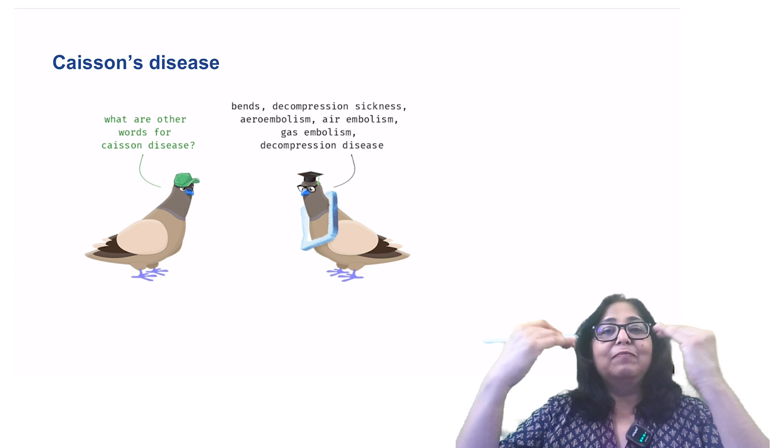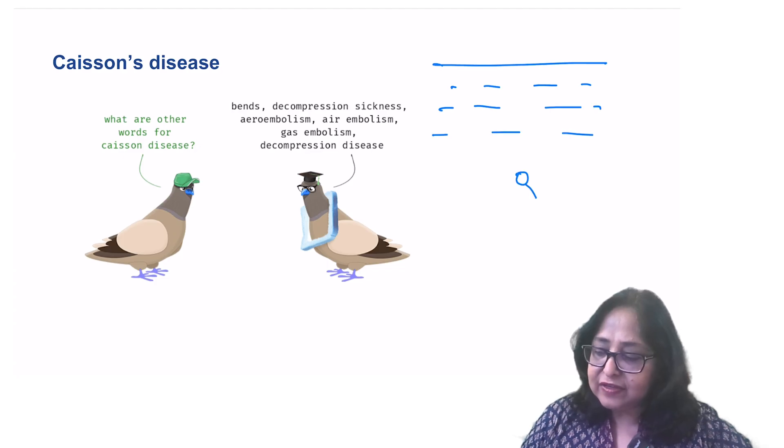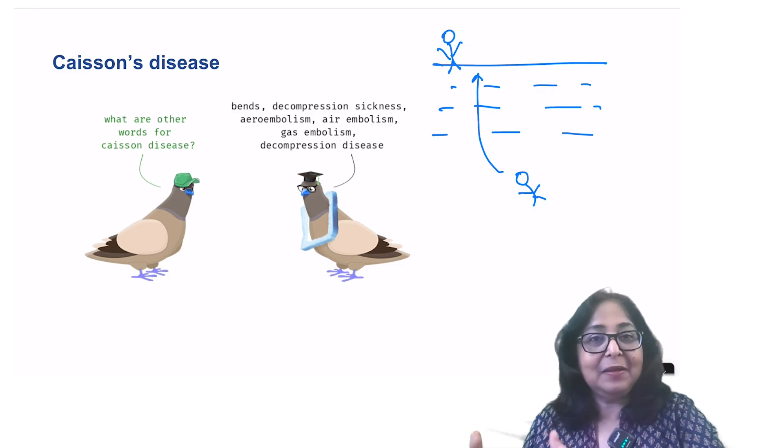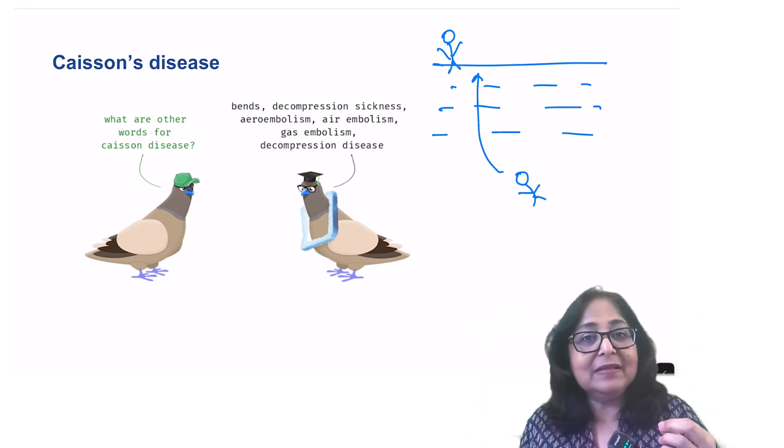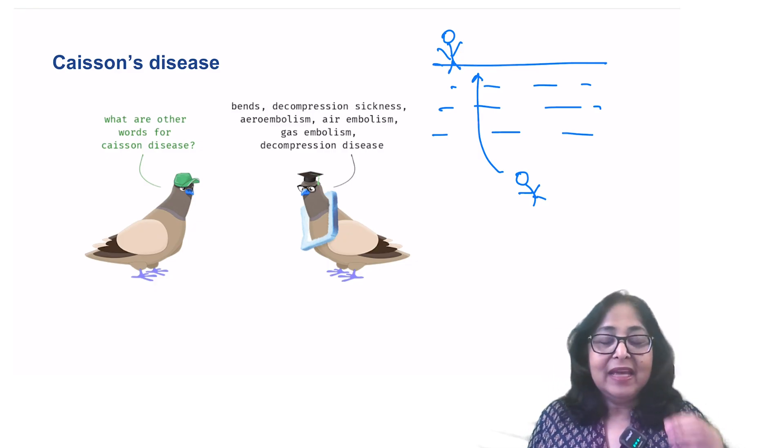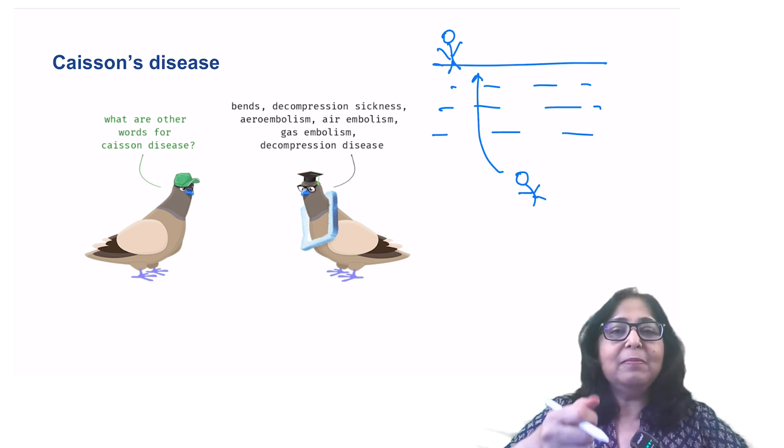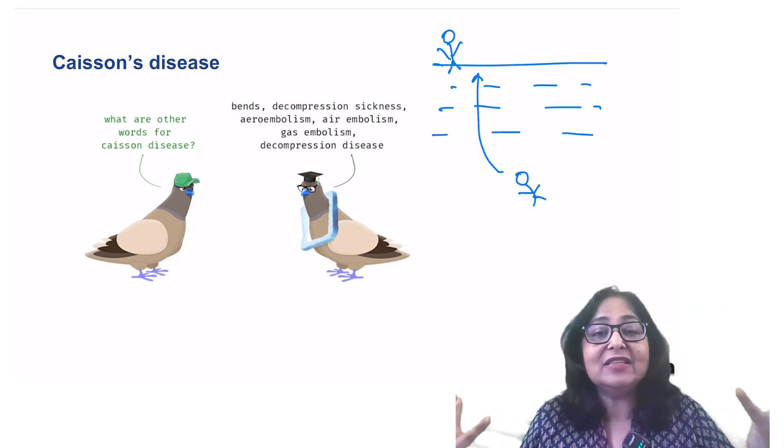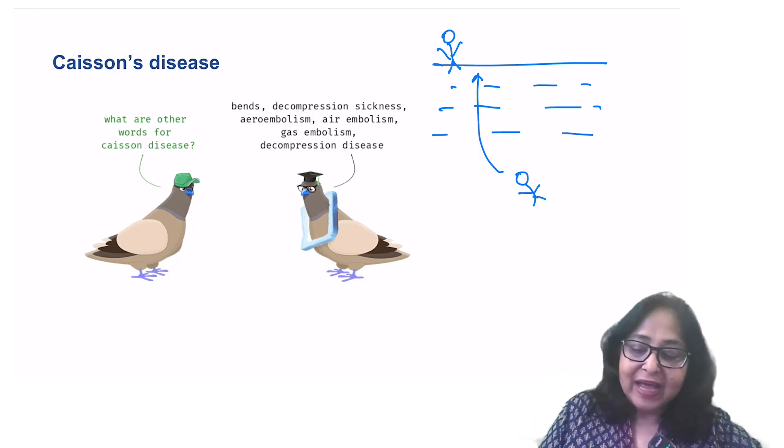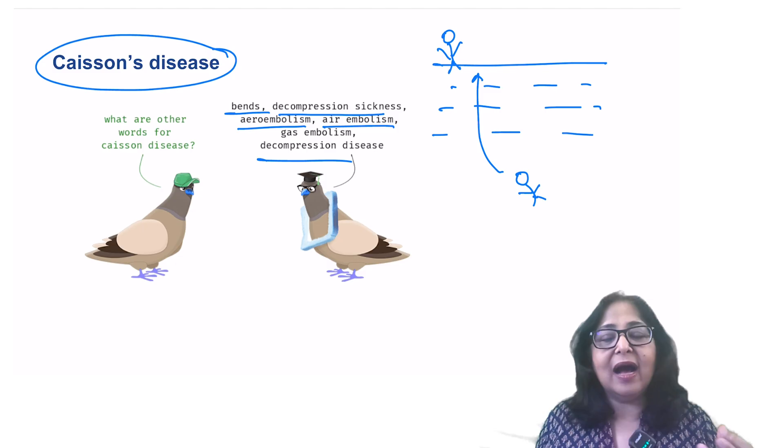Now, when the diver comes to the surface, and especially if he makes a very rapid ascent to the surface, remember underwater, the gases were in a dissolved state. But when he comes to the surface, these gases start forming bubbles. And these bubbles will now cause air embolism. It is like when you open a can of Pepsi. When the can was closed, carbon dioxide is in a dissolved state. But the moment you open a bottle of Pepsi or a can of Pepsi, the carbon dioxide starts forming bubbles because there is a sudden release of pressure. This gives rise to what is known as the caisson's disease, also known as decompression sickness, bends, aeroembolism, air embolism. All of these are because of gas emboli blocking blood vessels.